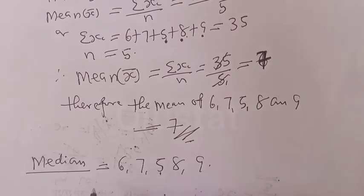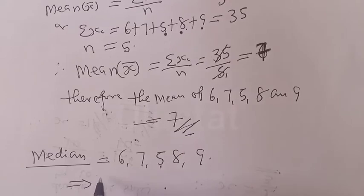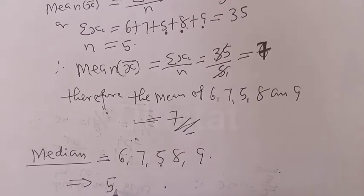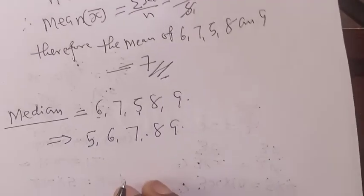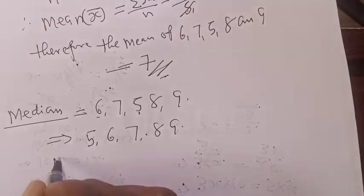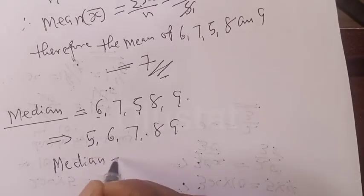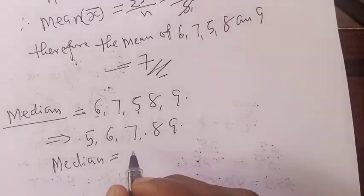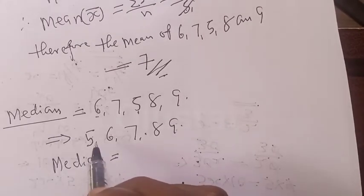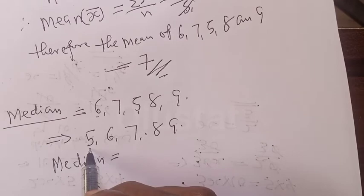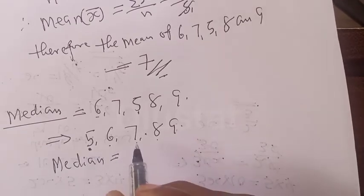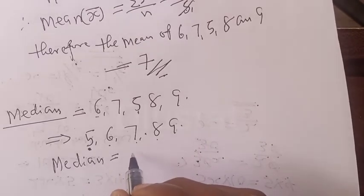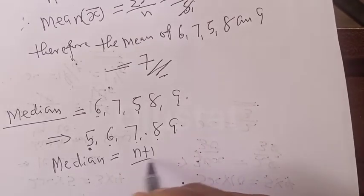If we rearrange in ascending order, this implies we have: 5, then 6, then 7, 8, and 9. Therefore, the median is the one in the middle. The n value here is an odd number — that is 1, 2, 3, 4, 5, which is an odd number. Here is the formula: the median is equal to the value at position (n plus 1) over 2.